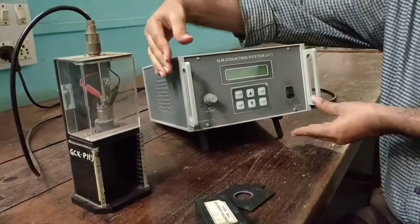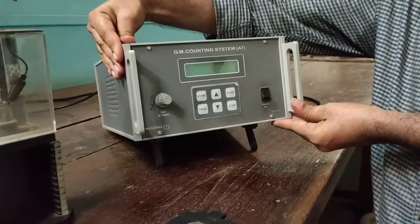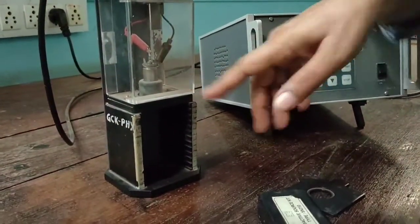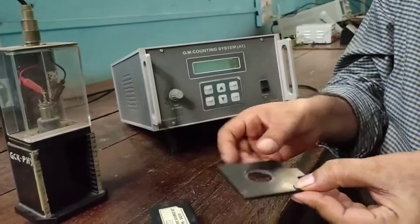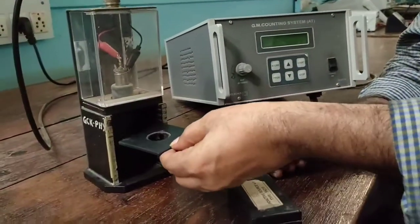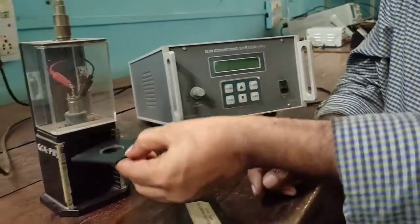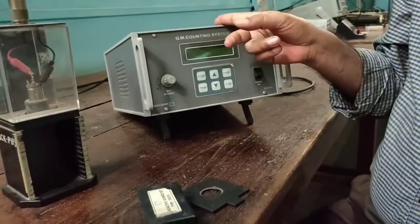So this is the nucleonic counting system, electronic counting system, but the main GM counter is here. You can see here there is a cylindrical structure. And source you can place it with the help of source holder in these sockets. So radioactive source must be taken here, it must be placed in the socket, and emitted counts will be recorded by the counter.